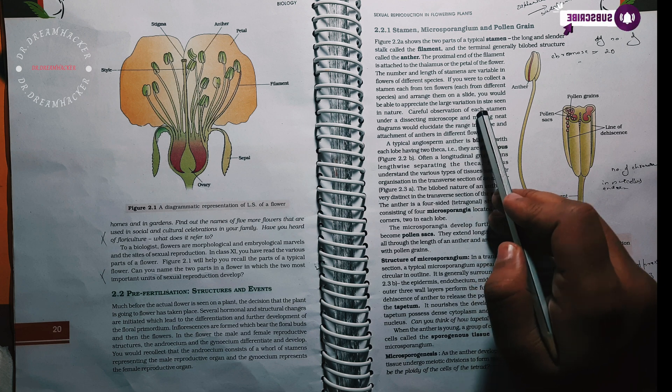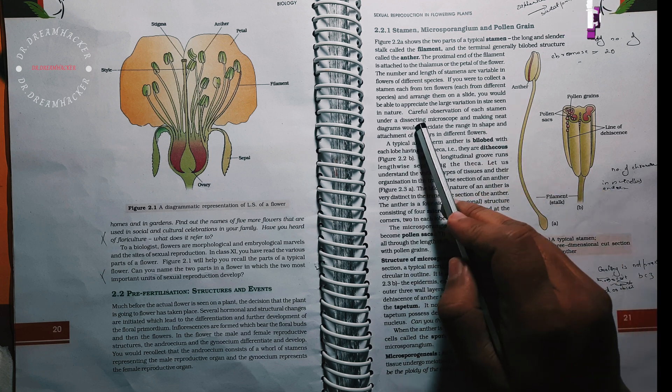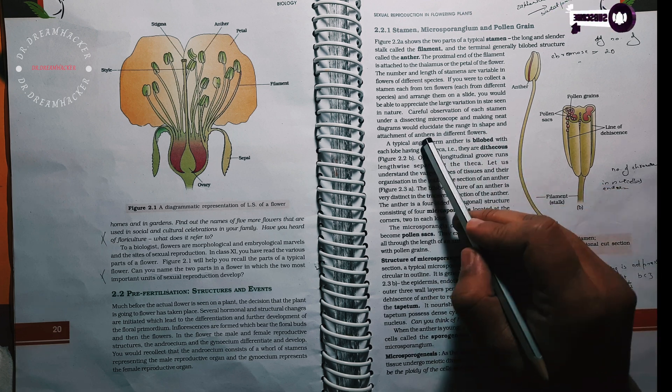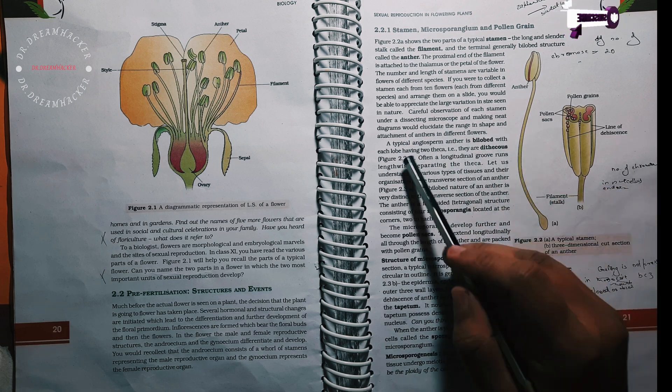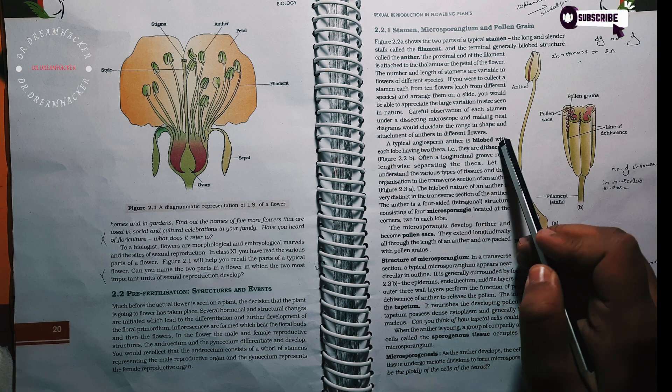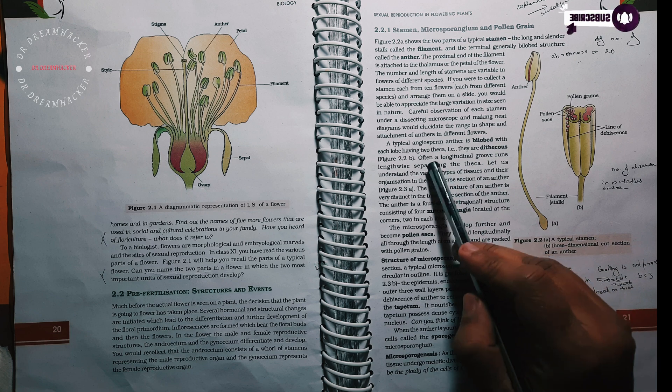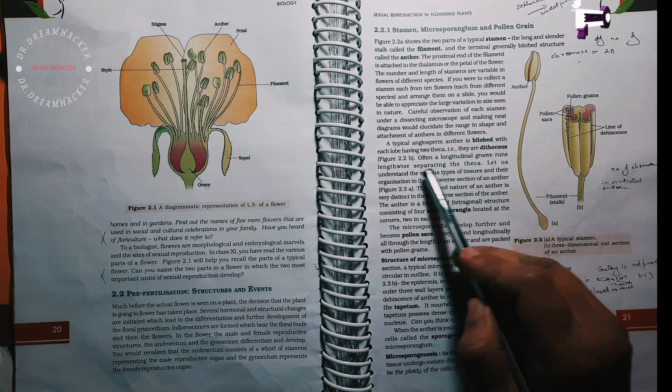Careful observations of each stamen under a dissecting microscope and making neat diagrams would elucidate the range in shape and the attachment of anthers in different flowers. A typical angiosperm anther is bilobed with each lobe having two theca. They are dithecous. Often a longitudinal groove runs lengthwise separating the theca.